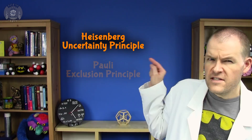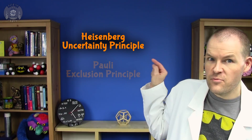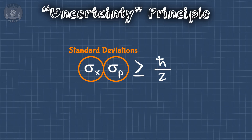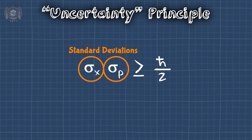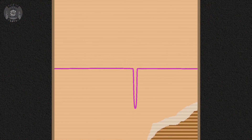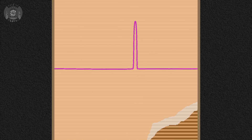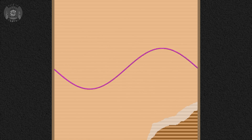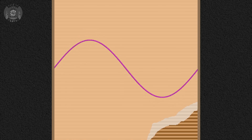Neutron stars do expand, just not in space. This is where we need the Heisenberg Uncertainty Principle. These quantities here are standard deviations — they give us an idea of the spread of possible values. If your wave is highly localized, the standard deviation is small. If there's a wide range of possible values, the standard deviation is large.